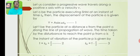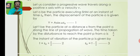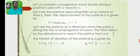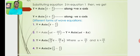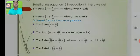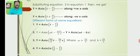The instant of vibration of the particle P is given by T = T₀ + X/V. This is equation number two. Further, this gives T₀ = T − X/V, which is equation number three. Substituting equation three into equation one, we get Y = A sin(T − X/V) along the positive X-axis, and Y = A sin(T + X/V) along the negative X-axis.